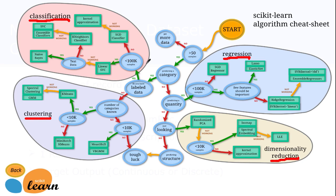If you have data with labels that are discrete rather than continuous, you can use Naive Bayes classification, kernel approximation classification, k-nearest neighbor classification, linear SVC, or SGD classifier. The names may not make sense right now, but once we go through each individual algorithm and apply them on top of data, you will realize the immense potential of each algorithm.